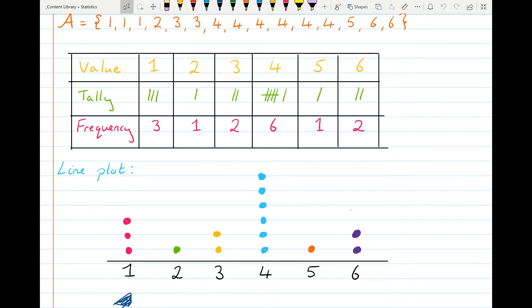So in this example, the number one appeared three times so there are three dots above one. Two appeared once so it's one dot, three appeared twice, two dots and so on.